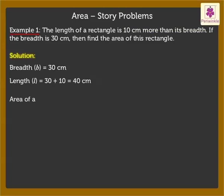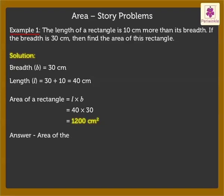The area of a rectangle is equal to length into breadth, which is equal to 40 into 30, which is equal to 1,200 square centimeters. Thus, area of the given rectangle is 1,200 square centimeters.